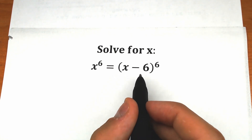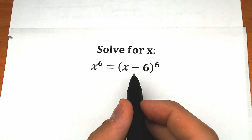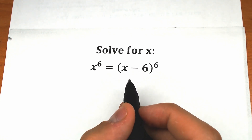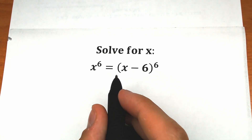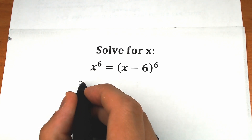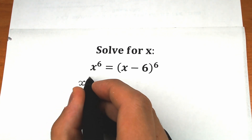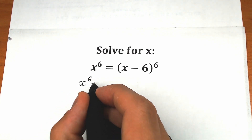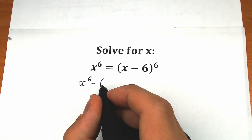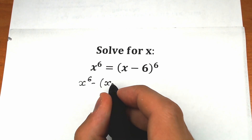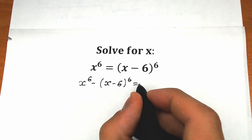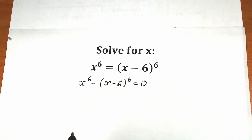First of all, let's bring x minus six to the sixth power from the right side to the left side. So what we have right here is x to the sixth power minus the parenthesis x minus six, all to the sixth power, equal to zero.